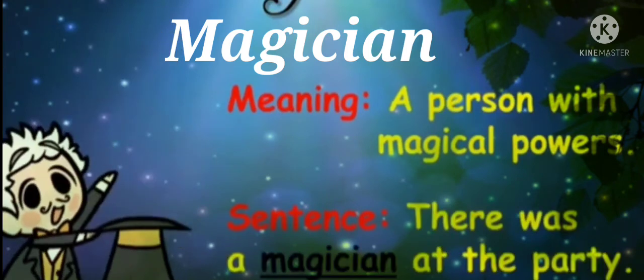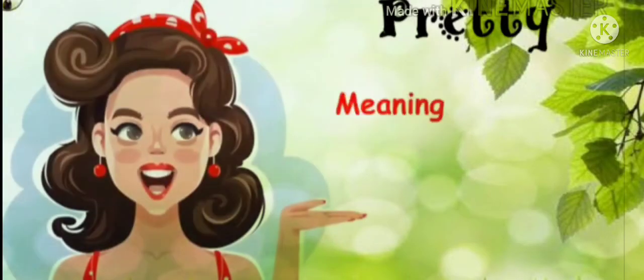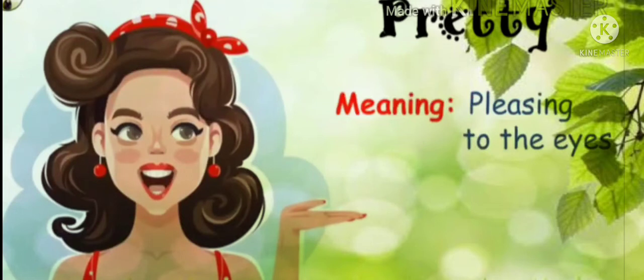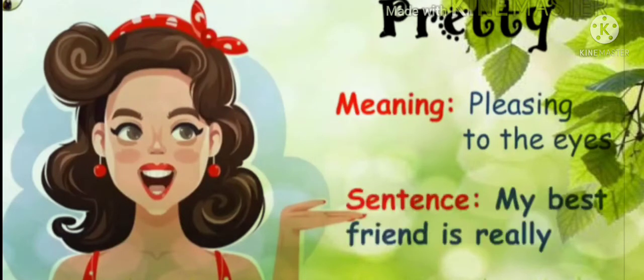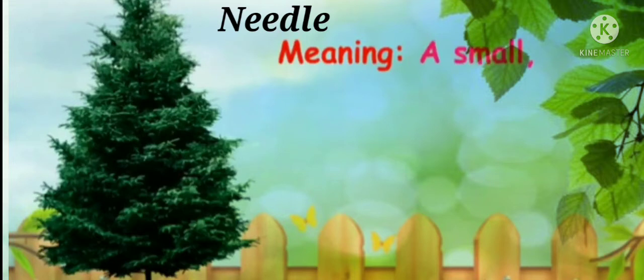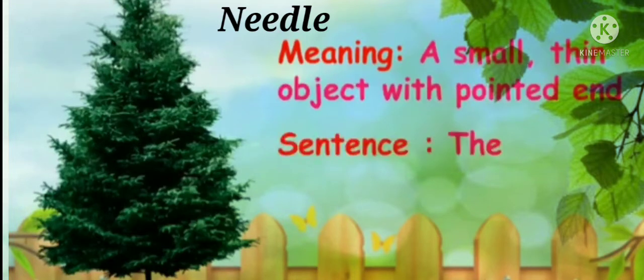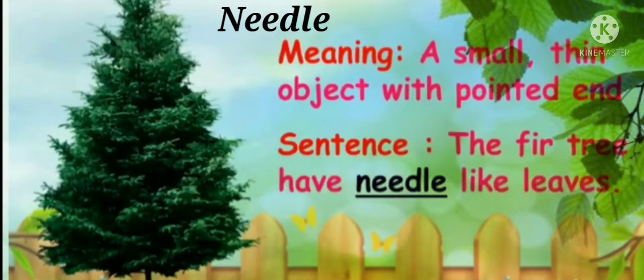Sentence: 'There was a magician at the party.' Next word: 'pretty' — meaning, pleasing to the eyes. Sentence: 'My best friend is really pretty.' Next word: 'needle' — meaning, a small thin object with a pointed end.